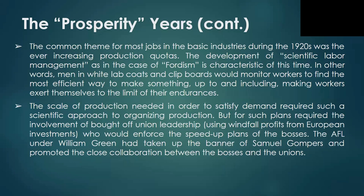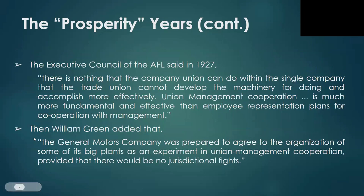The AFL under William Green had taken up the banner of Samuel Gompers and promoted class collaboration between the bosses and the unions. The executive council of the AFL said in 1927: 'There is nothing that the company union can do within the single company that the trade union cannot develop the machinery for doing and accomplish more effectively. Union-management cooperation is much more fundamental and effective than employee representation plans for cooperation with management.' William Green himself added that 'The General Motors Company was prepared to agree to the organization of some of its big plants as an experiment in union-management cooperation, provided there would be no jurisdictional fights.'